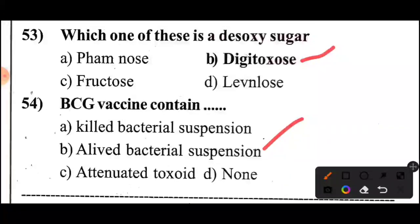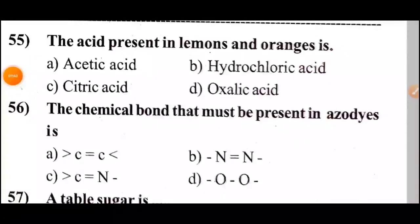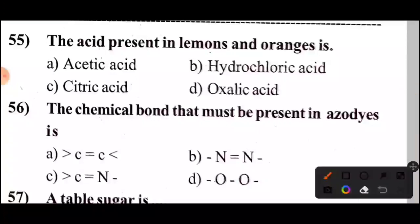Next question: The acid present in lemons and oranges is — 5 seconds. Answer: Option C — Citric acid. The acid present in lemons and oranges is citric acid.